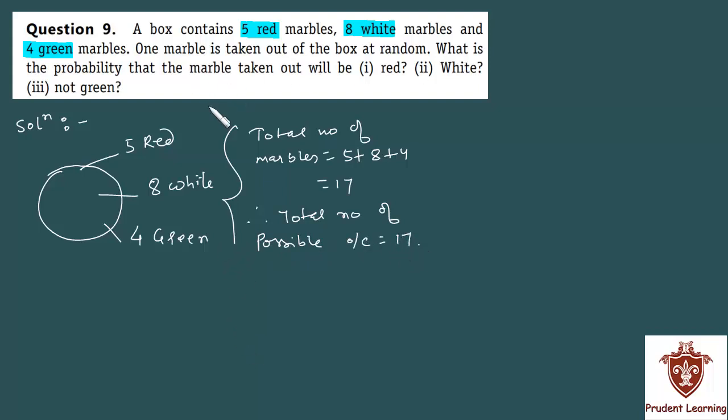Actually, you have to calculate probability in the question. Probability of any event E is number of favorable outcomes over total number of possible outcomes. So, in the formula, the denominator is total number of possible outcomes. It will always be, in this question, 17.